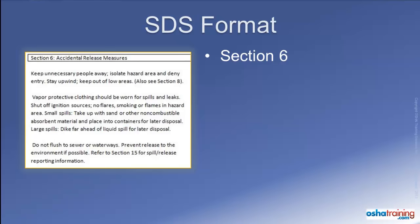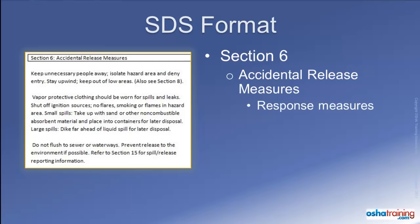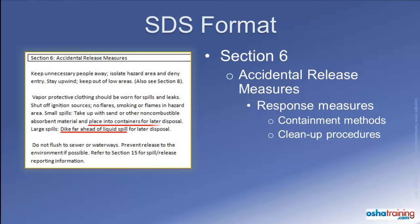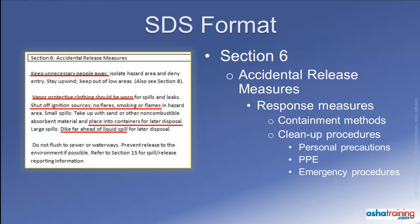Section 6 of the safety data sheet provides the manufacturer's recommendations for responding to spills, leaks, or accidental releases of their product. This could include response measures for containment and cleanup methods to prevent or minimize exposure for response personnel. This may include specific recommendations for protecting personnel from hazards such as sources of ignition or lack of ventilation, recommended personal protective equipment, emergency procedures including instructions for evacuation of response personnel, as well as others located nearby.